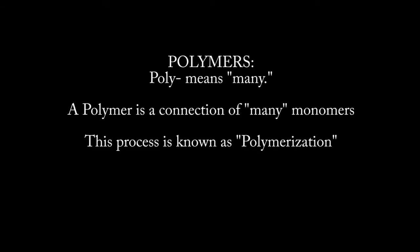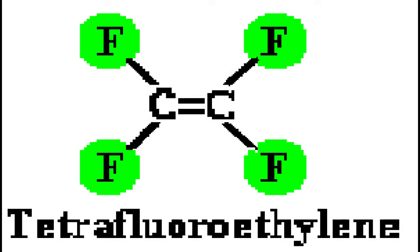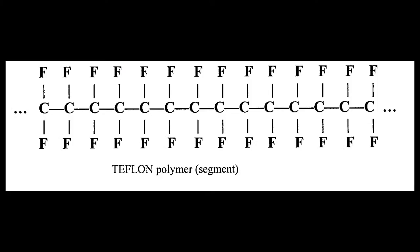A polymer is a chain of these monomers which connect in a process known as polymerization. So therefore, if our monomer from before were to undergo polymerization, it would look like this. Teflon. Which you'd probably know as this.